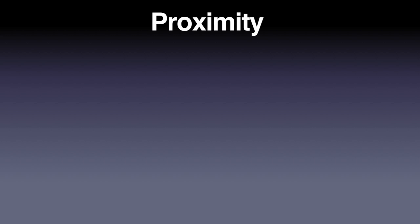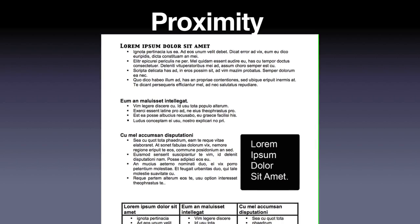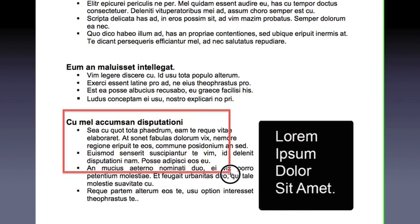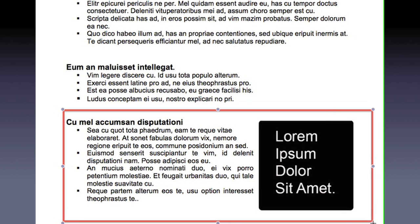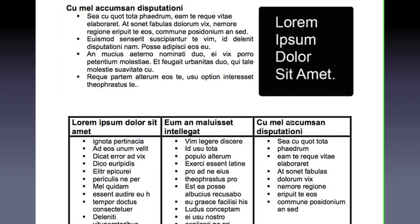The next principle, proximity, says related items must be positioned close together. In this example, the information grouped most closely together is related information. You can tell by the close proximity that this text and this graphic are related, and the items in the bullet lists of the table are also related.